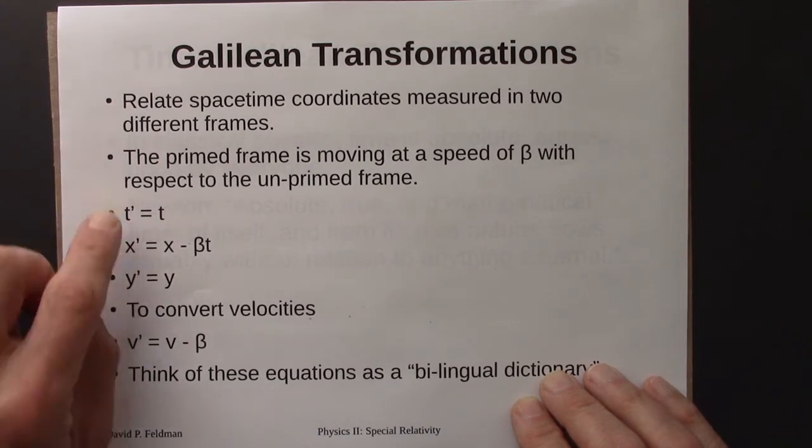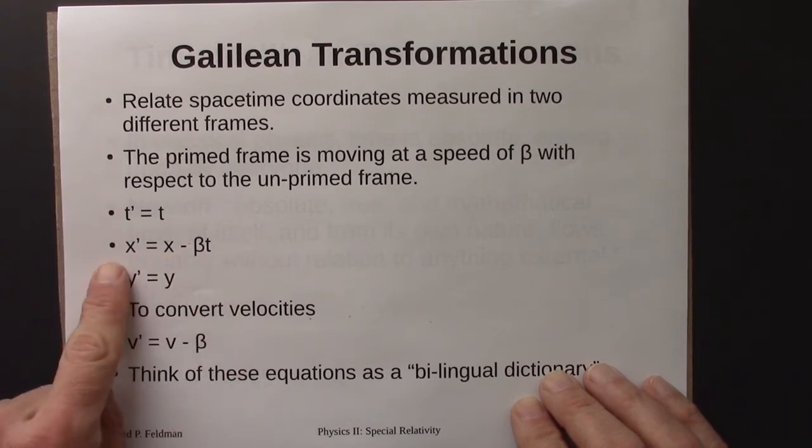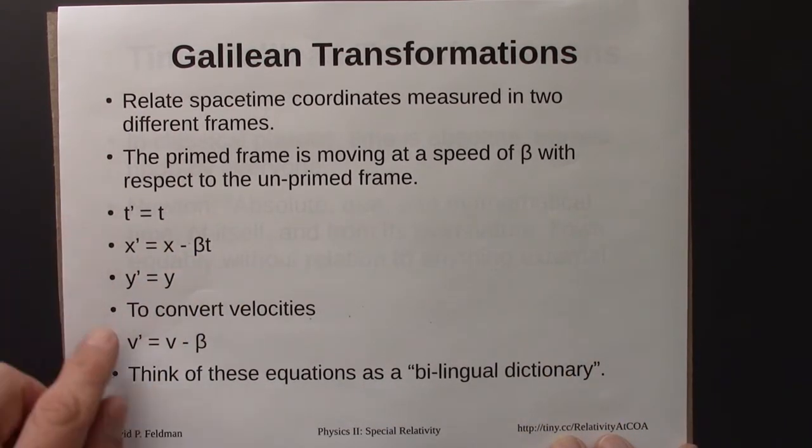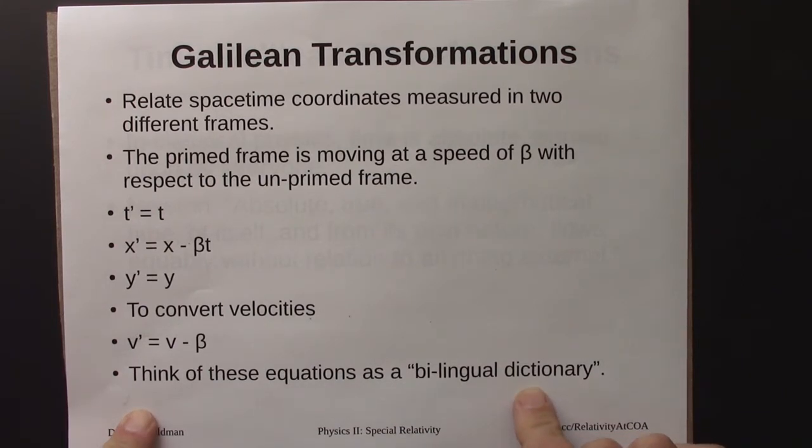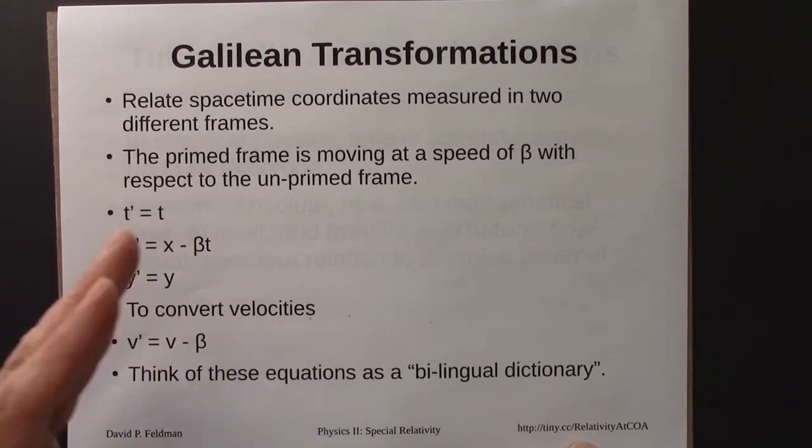So X and T would be the measurements in the at rest frame. X prime, T prime would be the measurements in the moving frame. And this tells us how to convert from one to the other or vice versa. I like thinking of this as a sort of bilingual dictionary. If you have an X and T measurement, you can convert to X prime and T prime and vice versa.